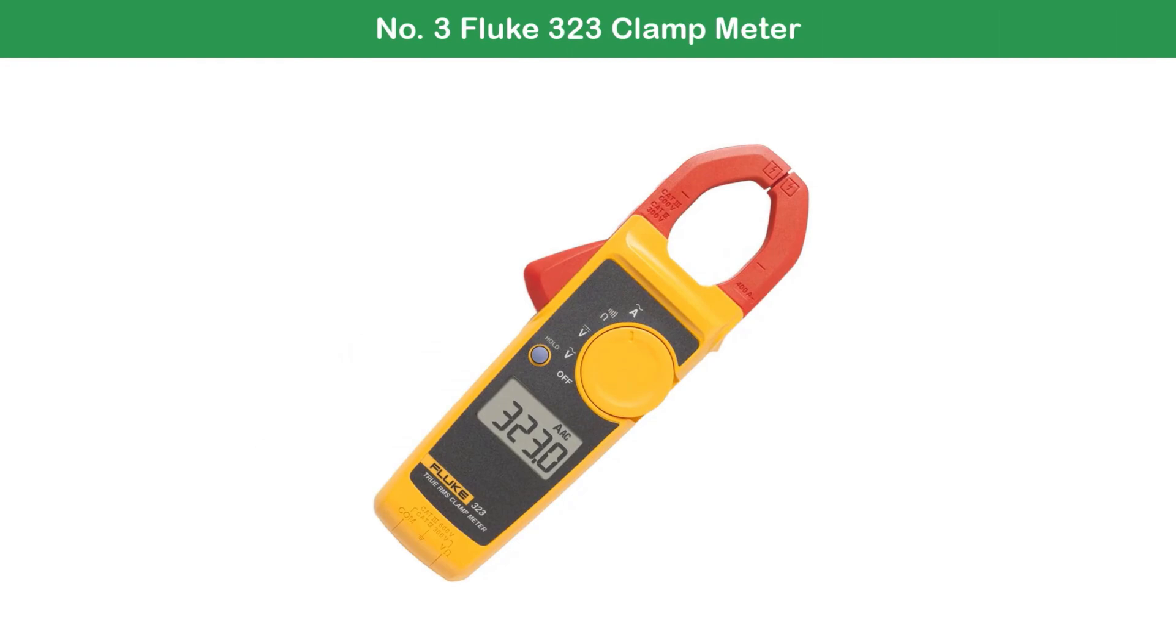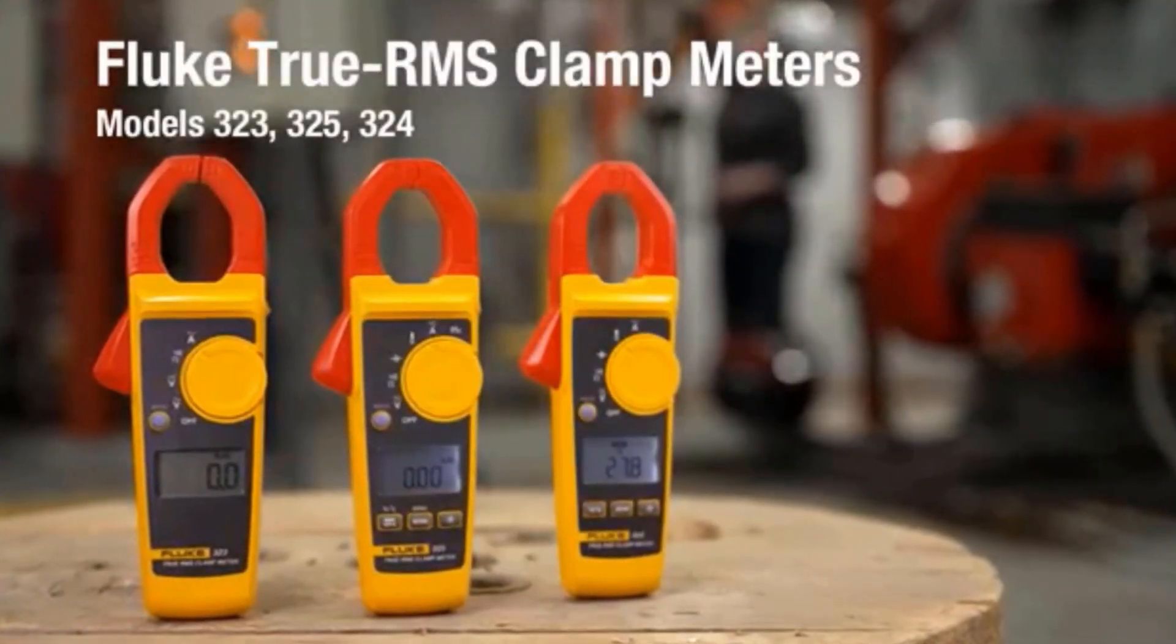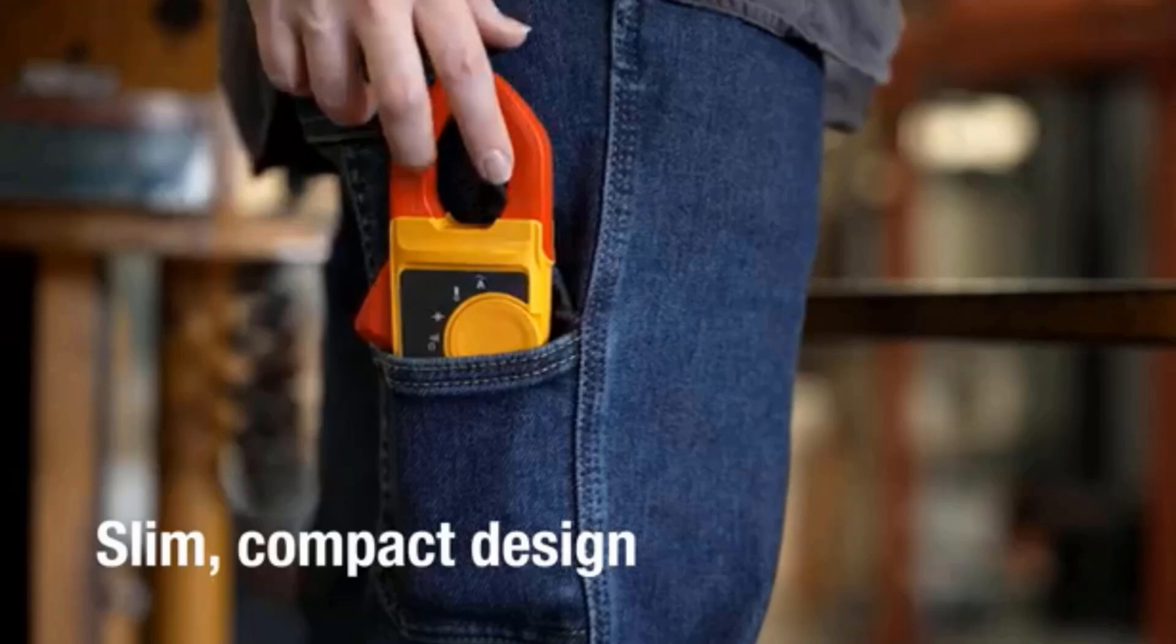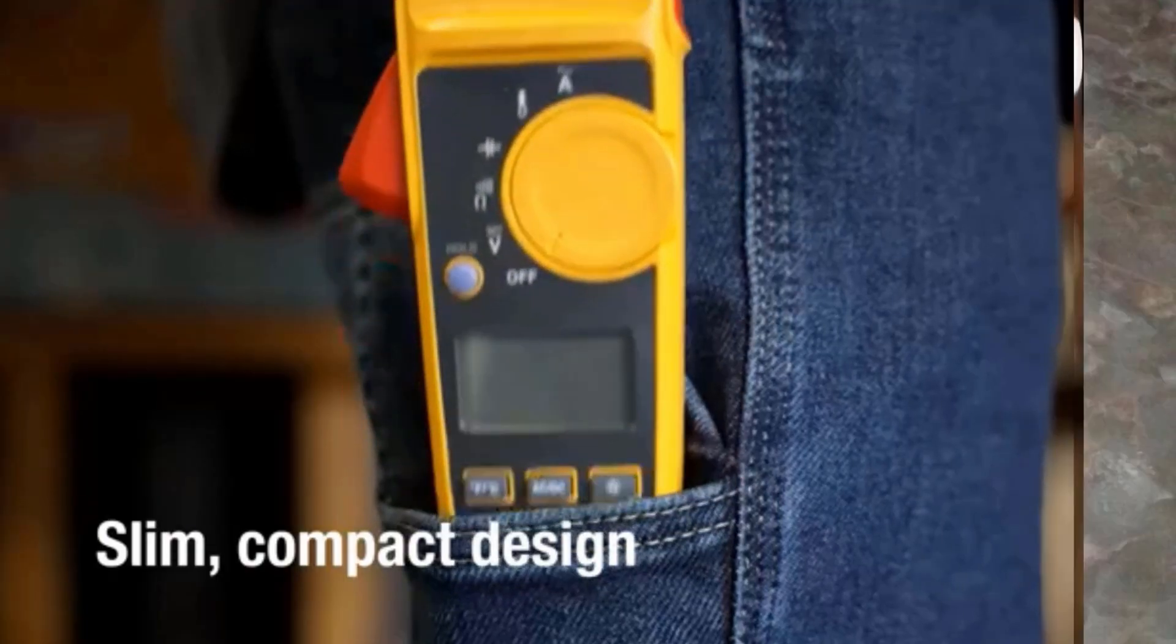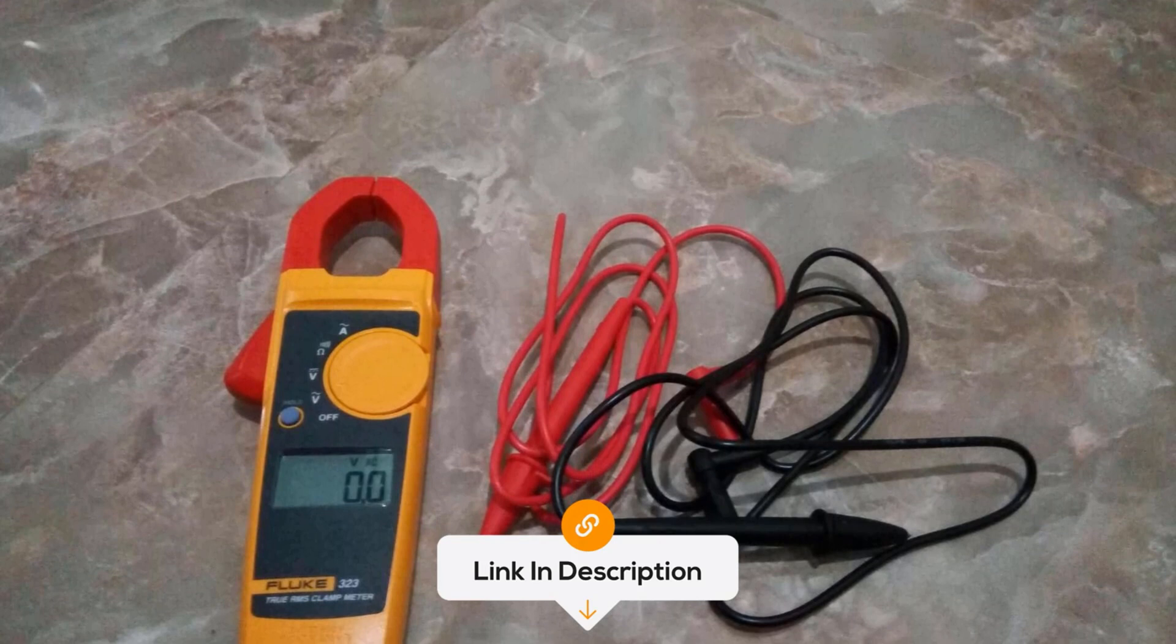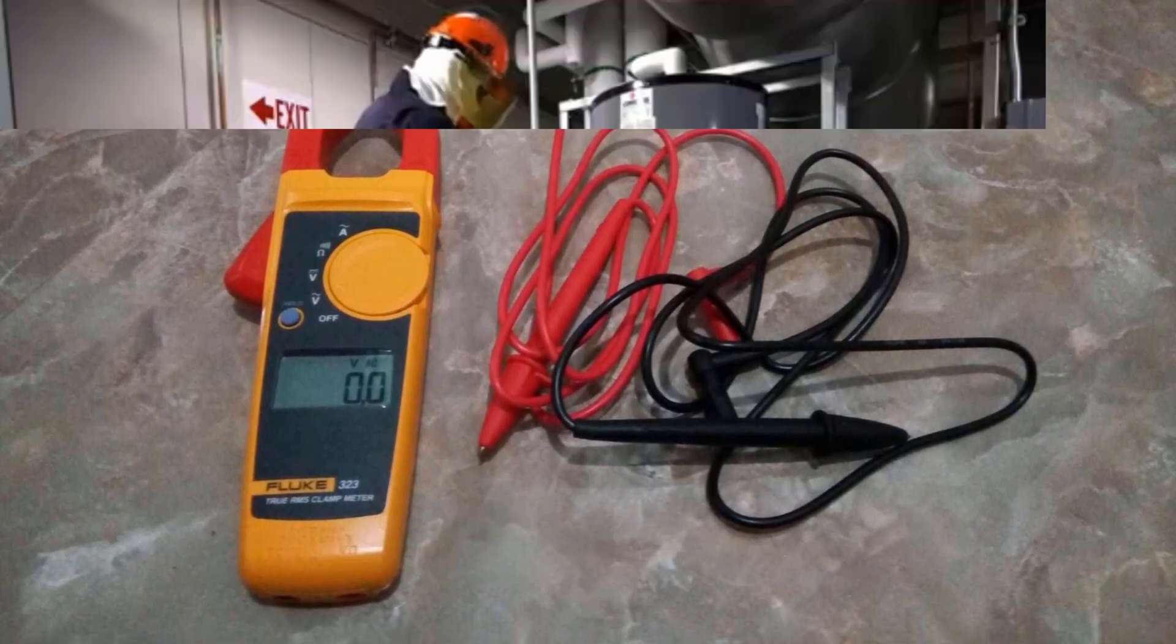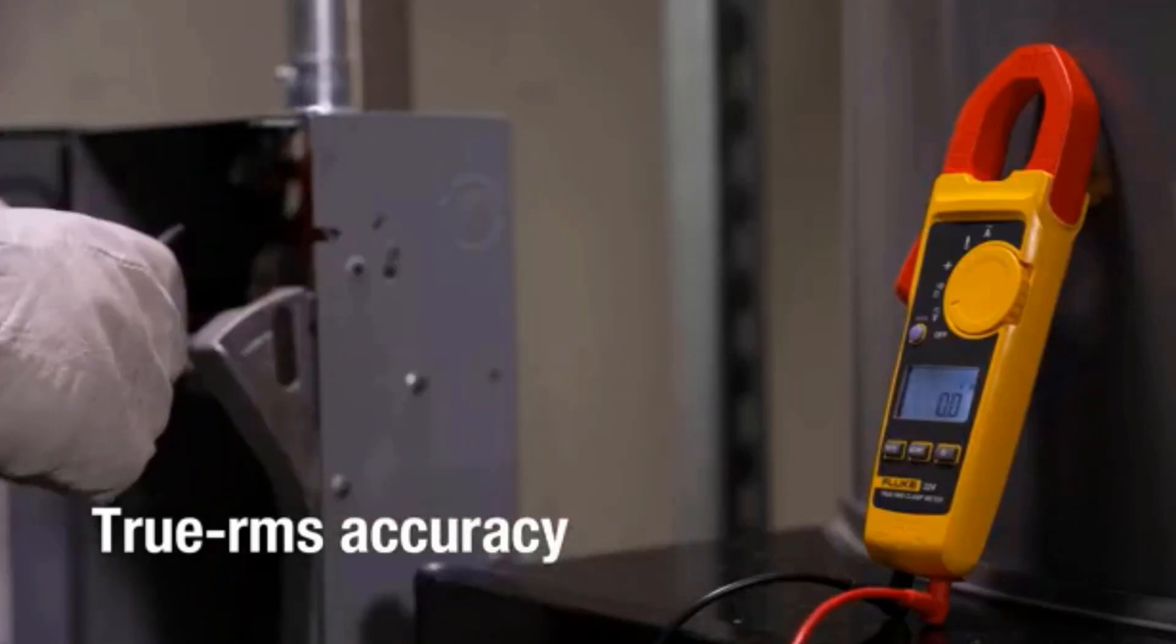Number 3: Fluke 323 Clamp Meter. The Fluke 323 Clamp Meter is a premium choice for electricians and technicians, known for its reliability and precision, securing its place among the best clamp meters. Built with Fluke's renowned durability, it's ideal for residential, commercial, and light industrial applications.